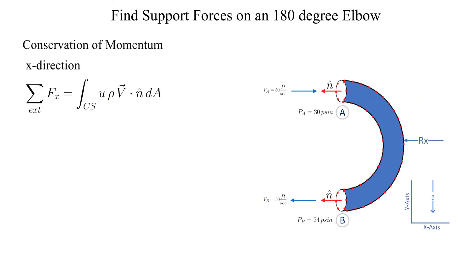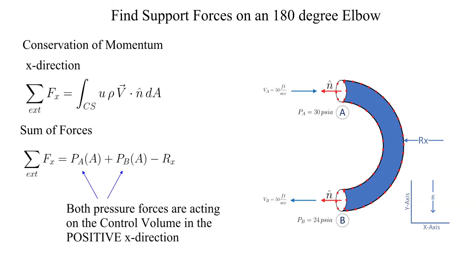Now we identify the external forces acting on the control volume. There are three. Two pressure forces, one at surface A and another at surface B. Both of these pressure forces are acting on the control volume in the plus x direction.